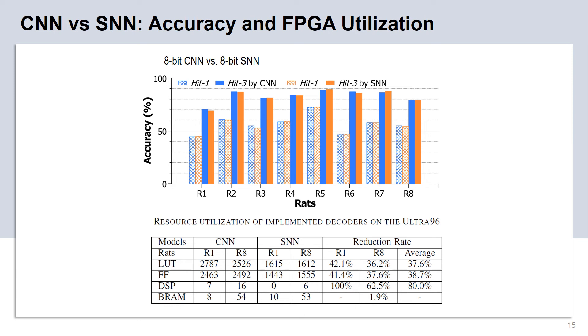In order to evaluate the hardware cost, we designed and implemented the CNN and SNN-based decoding kernels on FPGA using the high-level synthesis. The table shows that, across different rats, the SNN model generally has lower hardware cost. It saves 37.6% LUT, 38.7% flip-flop, and 80% DSP compared to the CNN model on average. The reason for the SNN's lower hardware cost is that it does not require multiplications as the CNN model does.